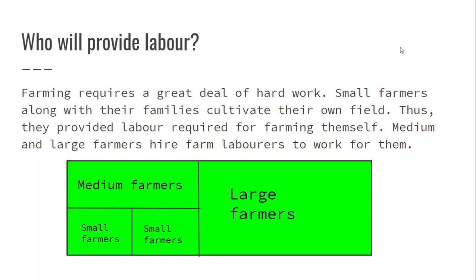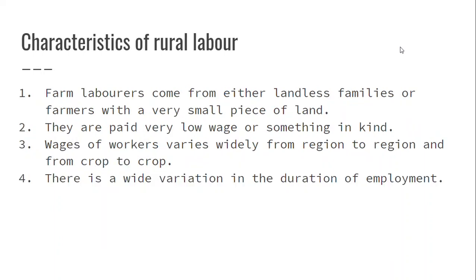This picture at the bottom is a depiction of how much land exactly each person gets. Small farmers mostly get less. Now, one person or even a family cannot work the whole field, especially if you're a medium or large farmer. So the medium and large farmers hire farm laborers, who are either landless farmers or who have very little land. These people come and work for the large and medium farmers and receive a very low wage, or they get something in return like fruits, vegetables, food, or anything.